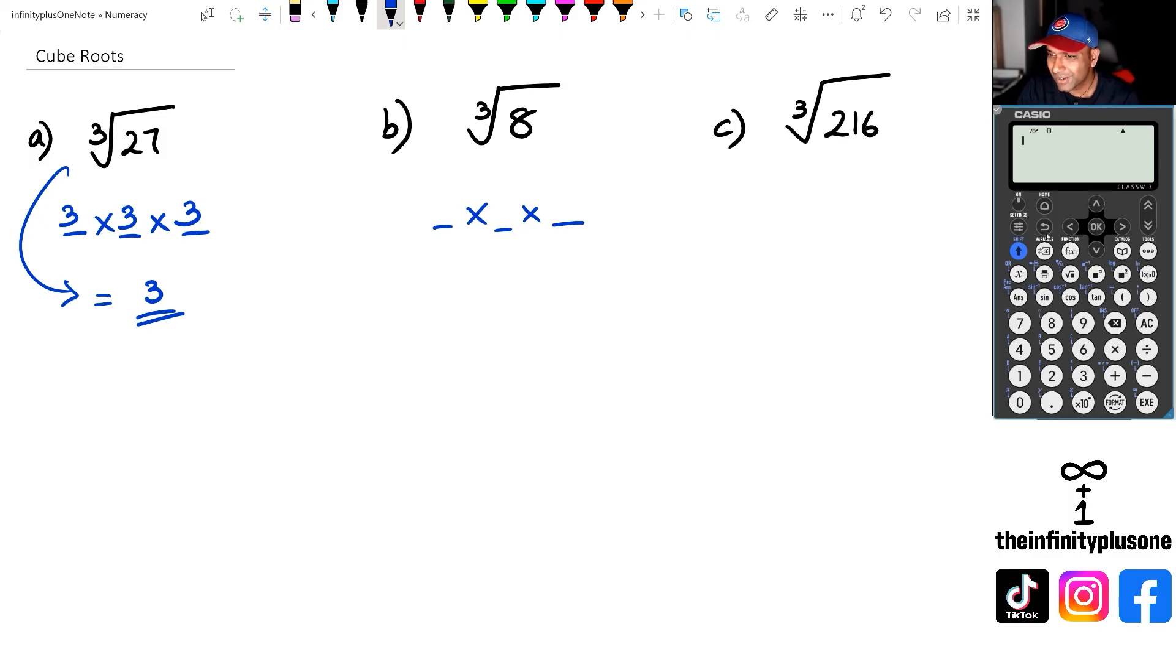So what we're going to do is we're going to go shift and try and get that cube root function there. So we're going to put in 3 and we're going to put in 8. Now if you guessed 2, you're absolutely right, because 2 times 2 is 4, 4 times 2 is 8.